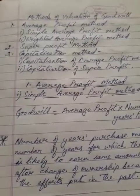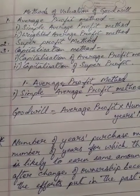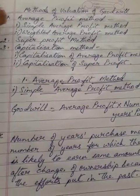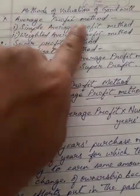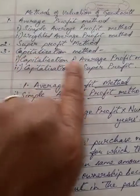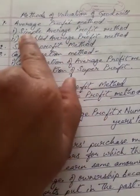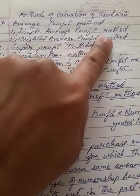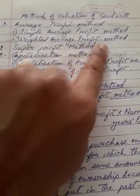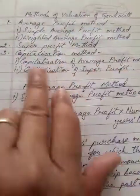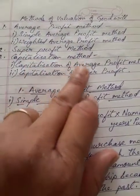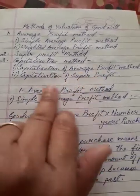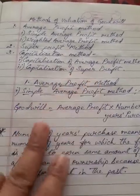Next are the methods of valuation of goodwill. There are three methods to calculate goodwill: Number one, Average Profit Method; Number two, Super Profit Method; and Number three, Capitalization Method. Under Average Profit Method, there are two sub-methods: Simple Average Profit Method and Weighted Average Profit Method. Super Profit Method is straightforward. Under Capitalization Method, we again have two methods: Capitalization of Average Profit, and Capitalization of Super Profit.